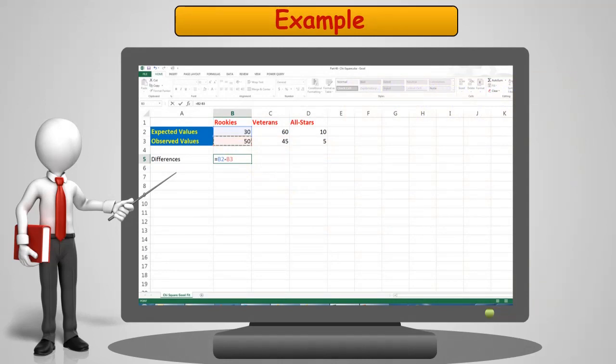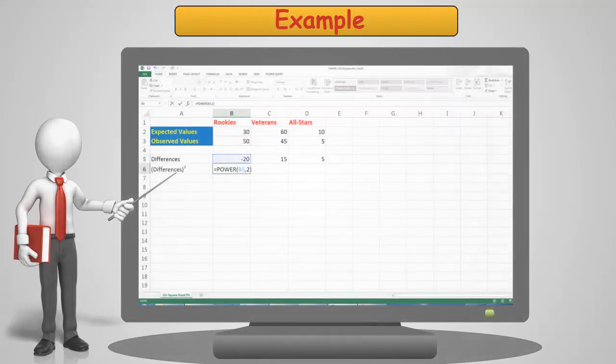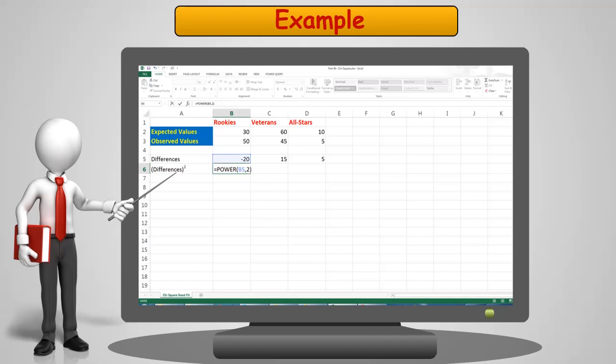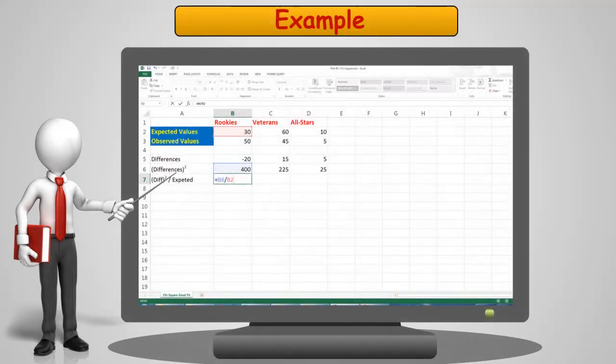The first step is very straightforward. We're simply going to take the expected value and subtract the observed value and record the difference. We'll do that for each of the three values. Next, for each of the three values, I'm going to use the power function in Excel to square each individual value.